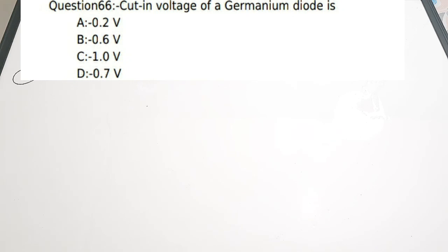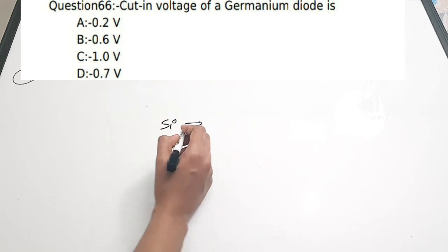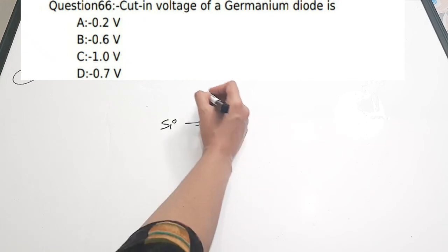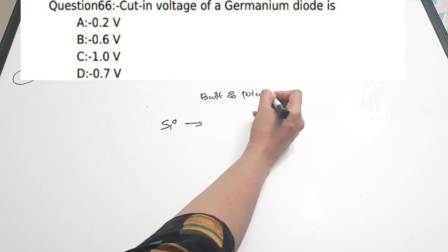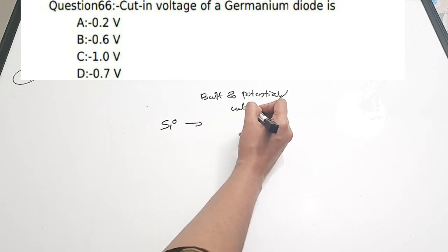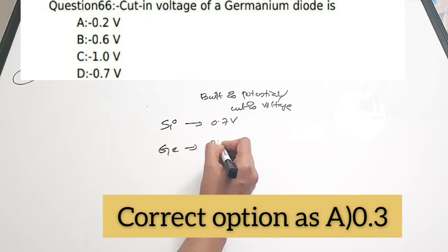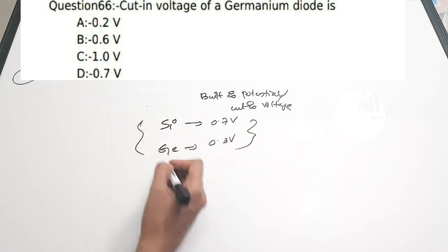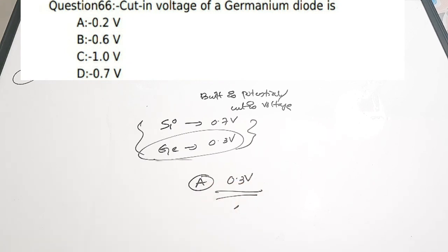Question 14: The cut-in voltage of a germanium diode is — A) 0.3V, B) 0.6V, C) 1.0V, D) 0.7V. For silicon, the cut-in voltage or built-in potential is 0.7V, and for germanium it is 0.3V. Since the question asks about germanium, the correct answer is option A, 0.3 volts.